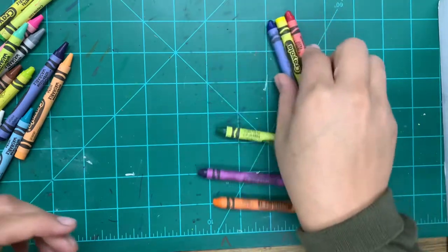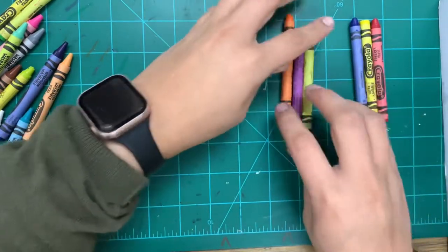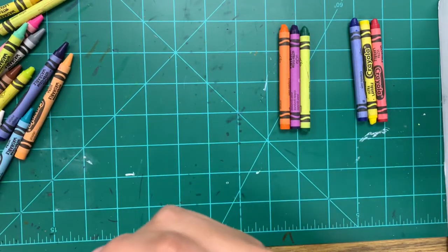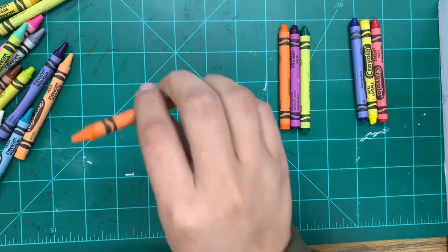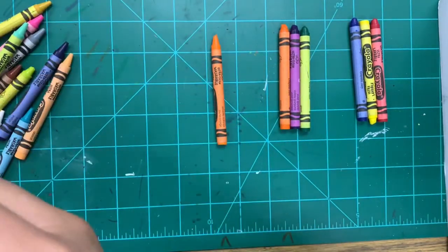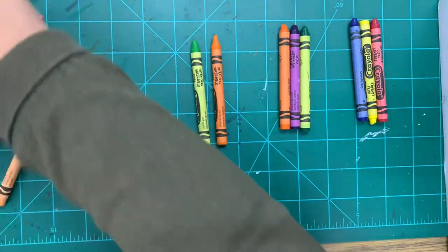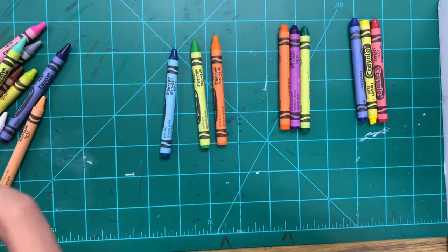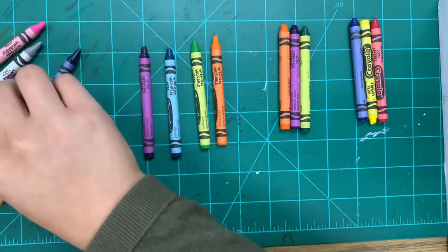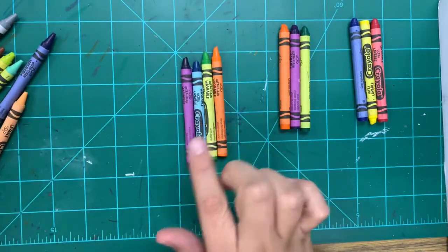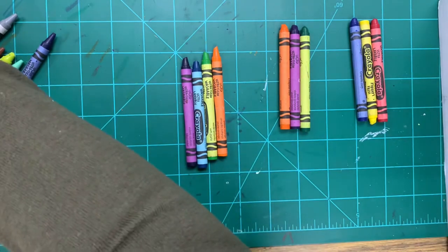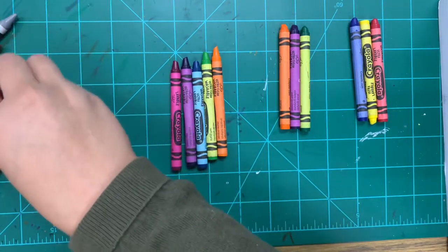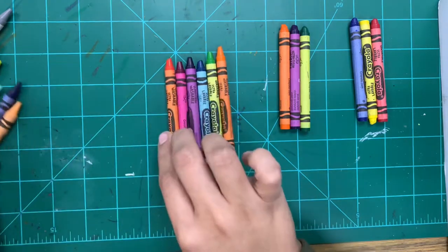Those are our primaries, these are our secondary. And our tertiaries, it's a very hard word to say, should be yellow-orange, yellow-green, blue-green, blue-violet. And there's six tertiary colors, so we need two more. Also red-violet, and the last one I need is red-orange. There you go.